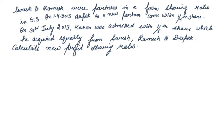Next question: Suresh and Ramesh were partners in a firm sharing ratio 5:3. On 1st April 2013, Deepak was admitted as a new partner with a 1/4 share. On 31st July 2013, Karan was admitted with a 1/6 share which he acquired equally from Suresh, Ramesh, and Deepak. Calculate the new profit sharing ratio. When a new partner purchases his share from old partners in a particular ratio, the new profit sharing ratio is calculated after deducting their sacrifice.